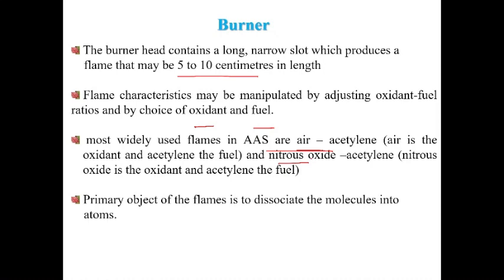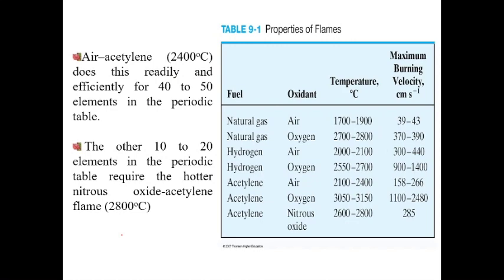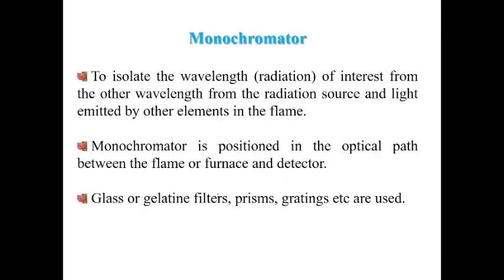Flame characteristics can be manipulated by adjusting the oxidant-to-fuel ratio and choice of oxidant. Most commonly, flames in AAS use air-acetylene (air as oxidant, acetylene as fuel); alternatively nitrous oxide-acetylene can be used. Air-acetylene can determine 40–50 elements; for elements requiring higher temperatures (~2800°C), nitrous oxide-acetylene is used. The primary objective of the flame is to dissociate molecules into atoms.